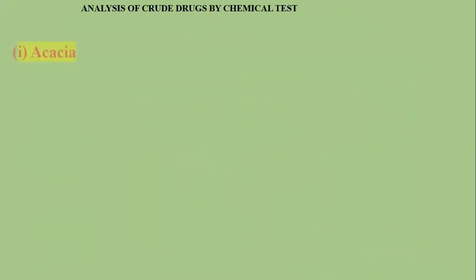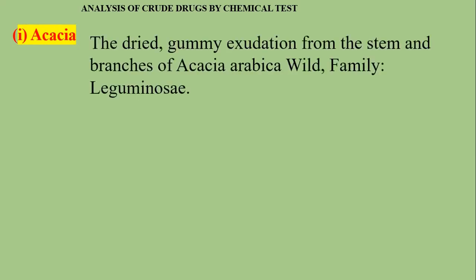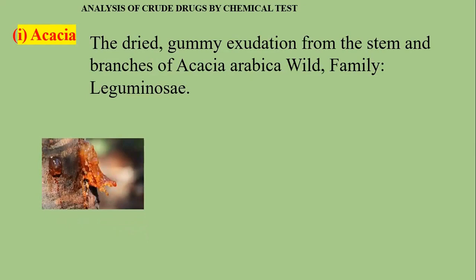In this one, we see the first drug that is acacia. The synonym of this drug is Indian gum. Acacia is nothing but a dried gummy exudation, which is obtained by making an incision on the stem part and the branches of Acacia arabica, belonging to the family Leguminosae. Whenever we make an incision on the stem part, a gummy exudation is formed. When that gummy exudation is dried and sticks to the stem part, we call it a gum.